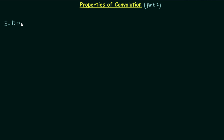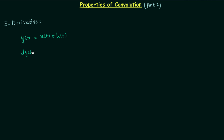The 5th property is the property of derivative. In this property we will understand what will happen when we find out the first derivative of the output of an LTI system, which is equal to convolution of the input and the impulse response. Let's say the impulse response of the LTI system is h(t) and the input is x(t). After convoluting them we get the output y(t), and we are interested in calculating the first derivative of the output y(t), which means dy(t)/dt.